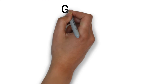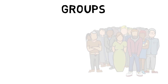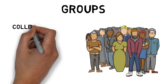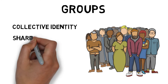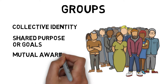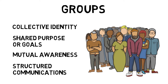Groups are two or more people that interact and influence each other. A group will commonly have a collective identity, a shared purpose or goals, mutual awareness and structured communications, such as a home crowd or a sports team.